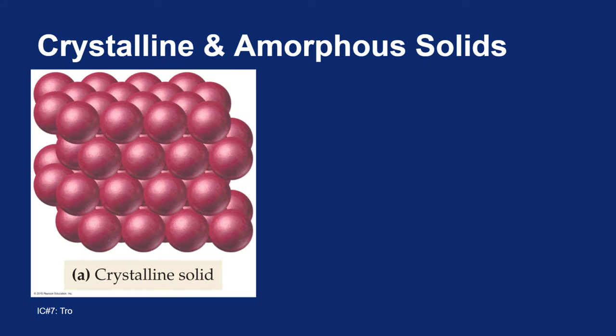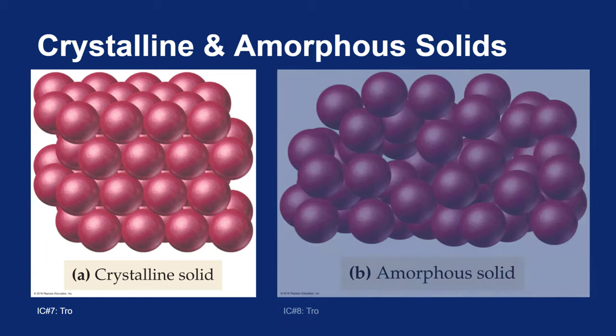They have this repeating geometric pattern that expands in three dimensions. The word amorphous means that there is no defined shape, so an amorphous solid doesn't have that nice crystalline pattern. The particles of an amorphous solid are just kind of lumped together.